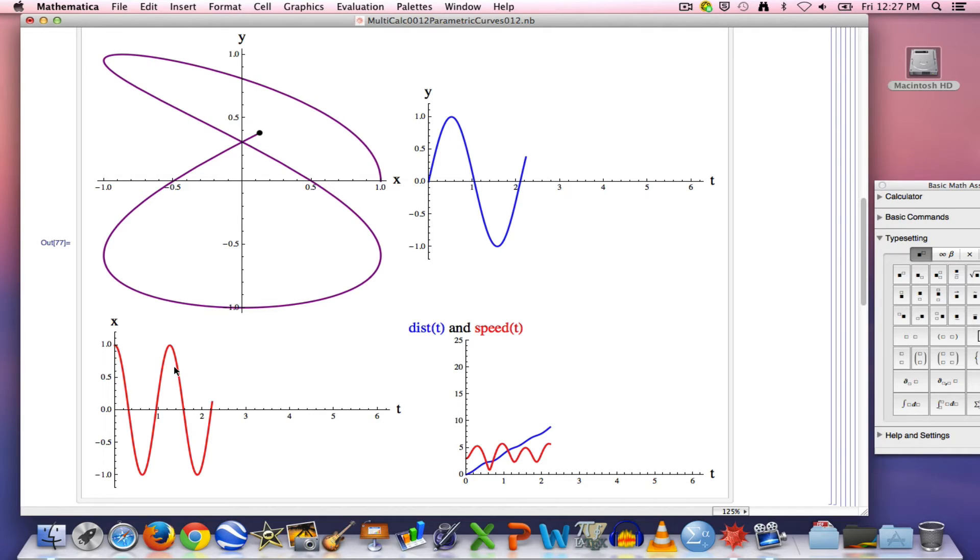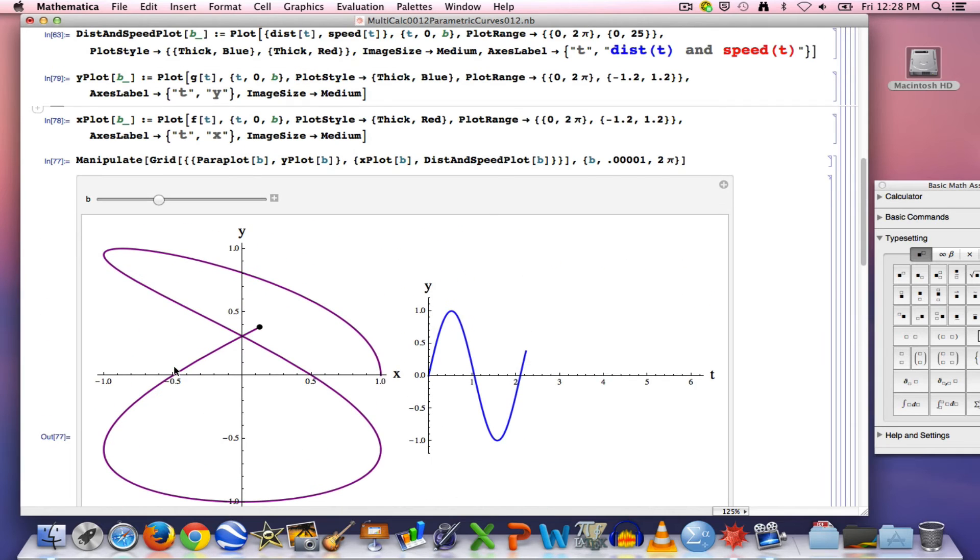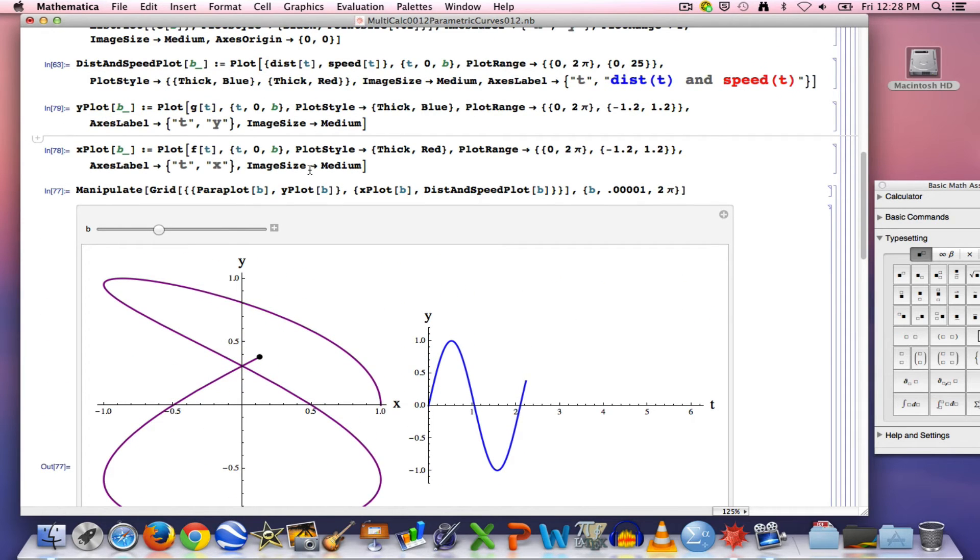It would actually be nice to take this graph of x as a function of time and rotate it 90 degrees clockwise so that x goes left and right positive to the right and t goes up and down positive downward. You want to match up the x here is what I'm trying to do so that it's horizontal. You can do that by doing the following. This is a little tricky and I don't fully understand it myself but I'll go ahead and do it for you.